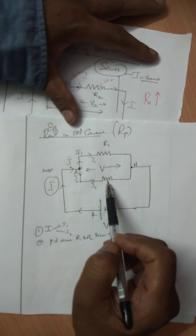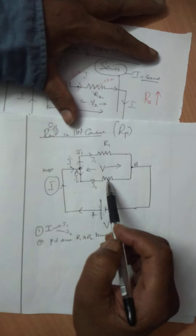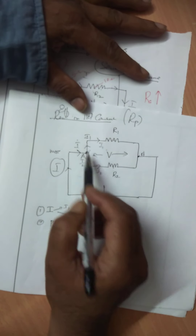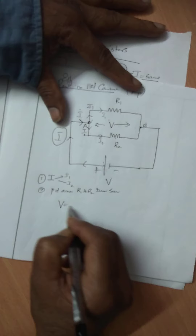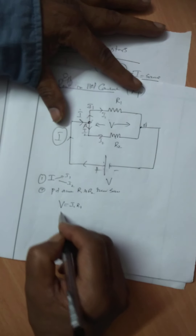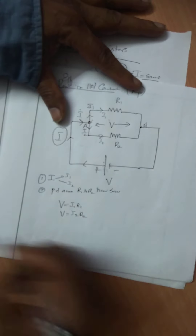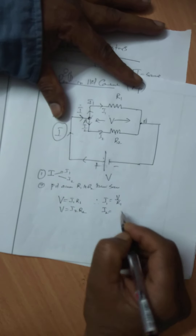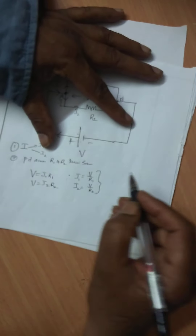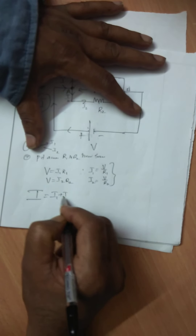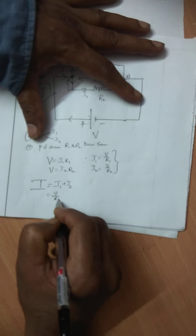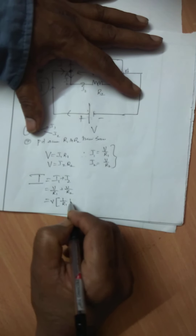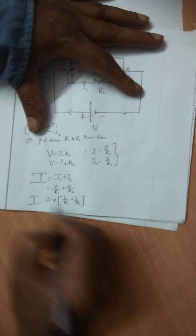Consider R1 and R2 combined in parallel — the resistors are in parallel if their respective ends are connected to a common terminal. According to Ohm's law, V equals I1·R1 and V equals I2·R2. Therefore, I1 equals V/R1 and I2 equals V/R2, so the main current I equals I1 plus I2, which equals V/R1 plus V/R2, giving V times (1/R1 plus 1/R2).